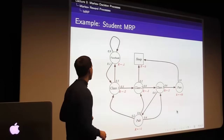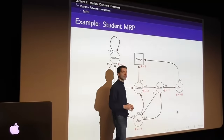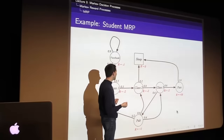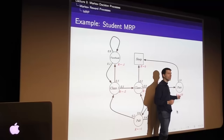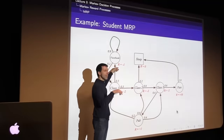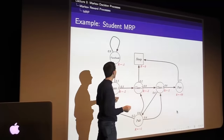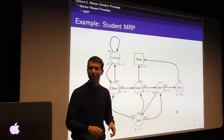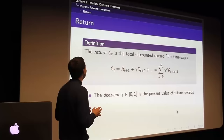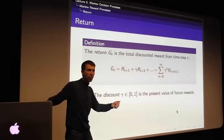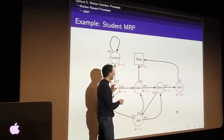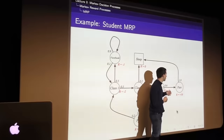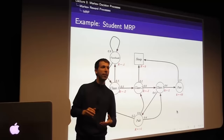Going back to the student example as a Markov reward process: sitting in class gives a reward of minus 2 per class. Passing gives a bonus of plus 10. Facebook gives minus 1 per step. Going to the pub gives plus 1. What we care about is the total rewards across the whole chain — not just reward for one state, but the sum: perhaps minus 2 plus minus 2 plus minus 2 plus 10. That total is the return for that sample.